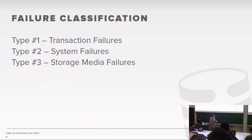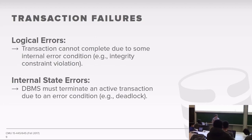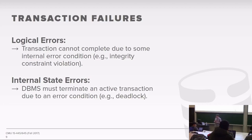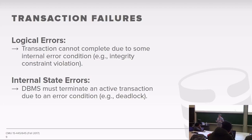There are three categories of failures we deal with: transaction failures, system failures, and storage media failures. Transaction failures have two types. First is a logical error, where some error condition in the actual database prevents the transaction from completing — for example, trying to insert a null value into a column that cannot be null. The database will abort your transaction. The second is an internal state error, where the database aborts the transaction due to some internal error condition, such as a deadlock detected under two-phase locking.